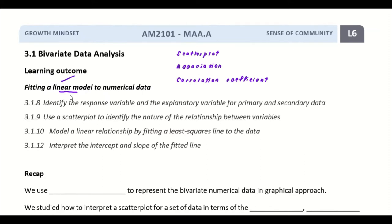The main focus of today's lesson covers 3.1.8 and 3.1.9, which we've partially addressed previously — identifying the EV and RV, then drawing the scatter plot, and using it to identify the nature of the relationship. Something new for today is how we model the linear relationship by fitting a least square line. Don't worry, we'll discuss and explain it together in the notes.